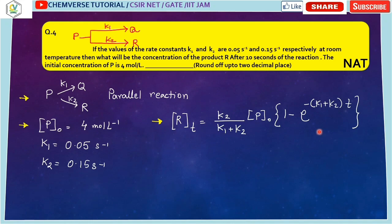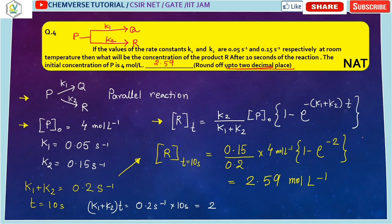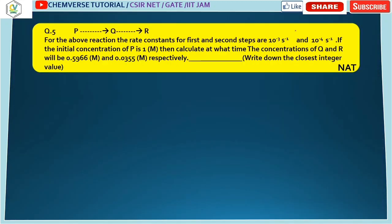Putting (k₁ + k₂)·t = 2 and P₀ = 4 M into the parallel reaction formula along with the other given values, we get the concentration of R ≈ 2.59 mol/L, rounded to two decimal places. So the answer is 2.59 M. This question appeared in the GATE 2019 exam.